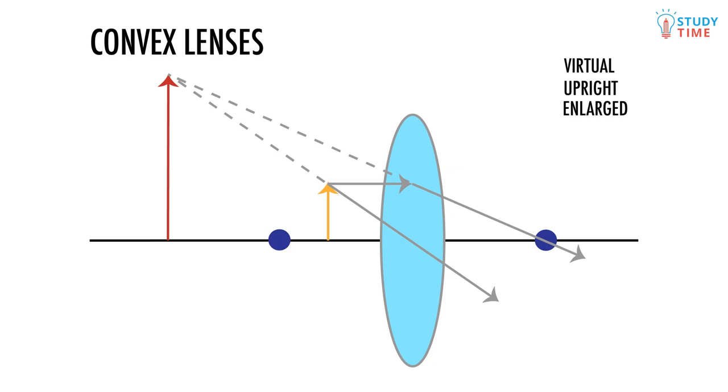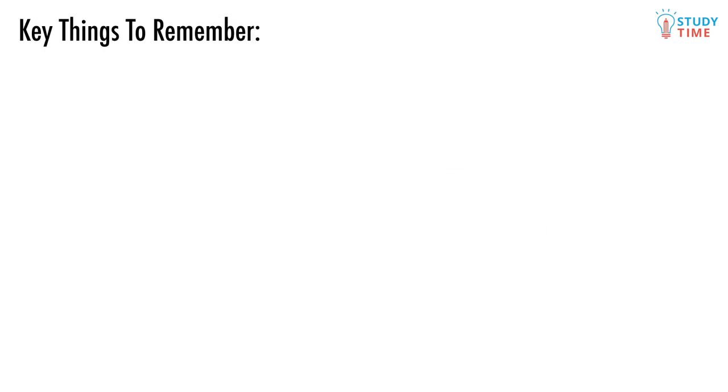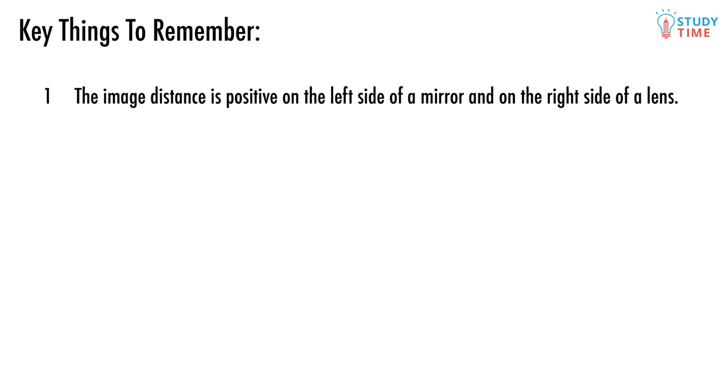And so the image we end up with is virtual, enlarged, and upright. Wonderful! Remember, the image distance is positive on the left side of a mirror and on the right side of a lens.